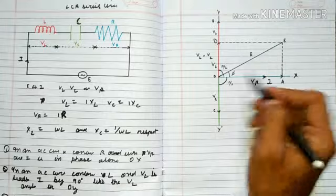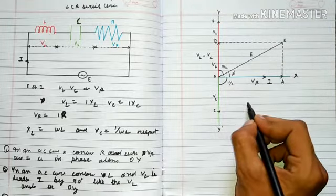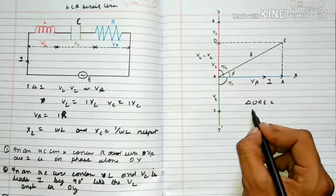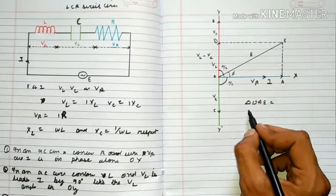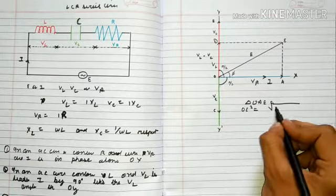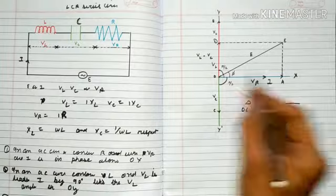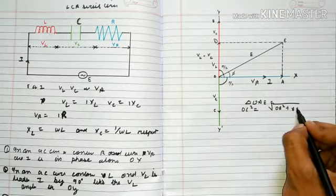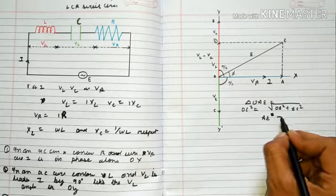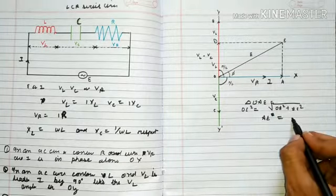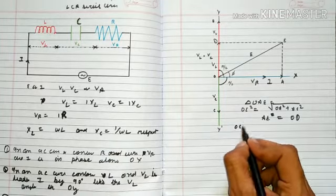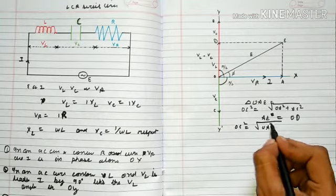Using Pythagorean theorem in triangle OAE: OE = √(OA² + AE²). Since AE is equal to OD, we can write OE² = OA² + OD².